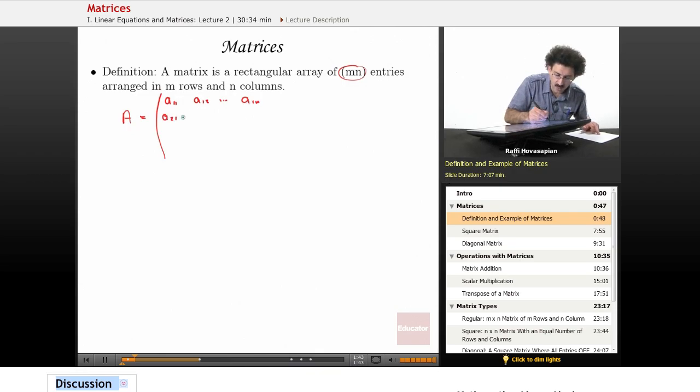So A₂₁, A₂₂, dot dot dot, A₂ₙ. And we'll go down, this will be Aₘ₁, Aₘ₂, dot dot dot, Aₘₙ.